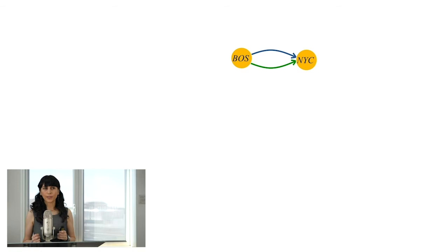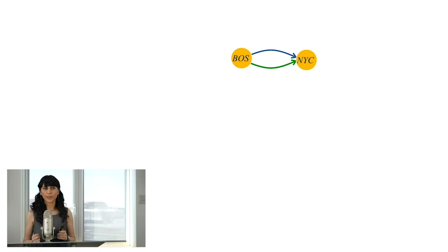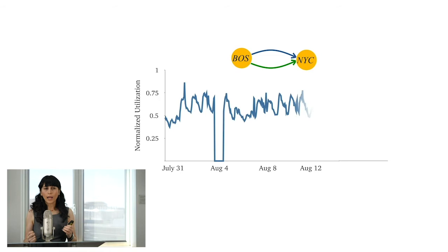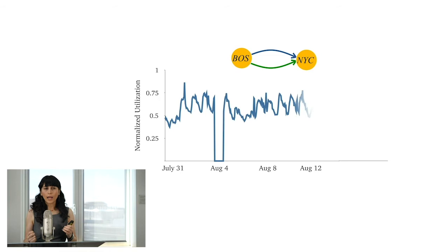Let me show you how this happens in practice. What I'm going to show you is on the x-axis is time, on the y-axis is normalized link utilization. And we are looking at the two links between Boston and New York. What happens is that everything seems normal except on August 4th. On August 4th, the top link has failed. And so its entire traffic goes down to zero. But the bottom link has enough capacity to capture the entire traffic, not only its own traffic but also the traffic of the top link. And so the network continues to function as such.